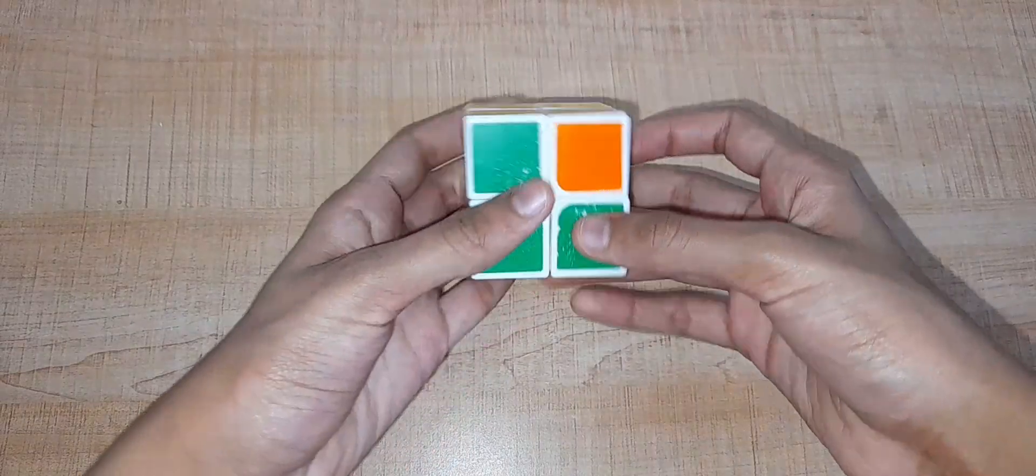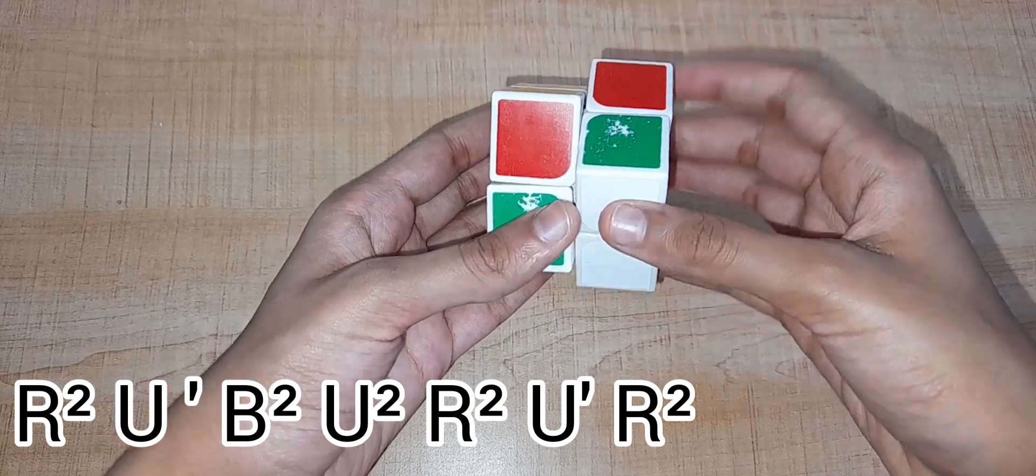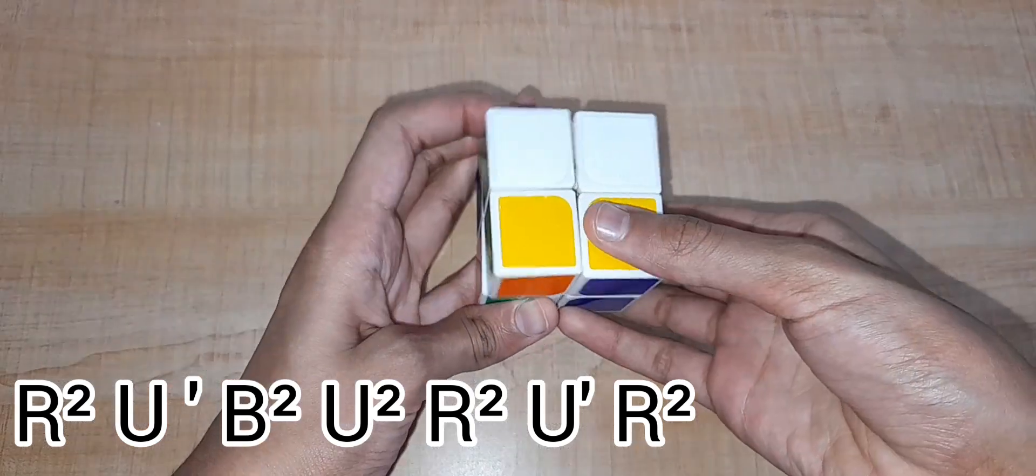In the first case, where you have a bar at the top and a bar at the bottom, make sure both of them are at the front and do this algorithm.